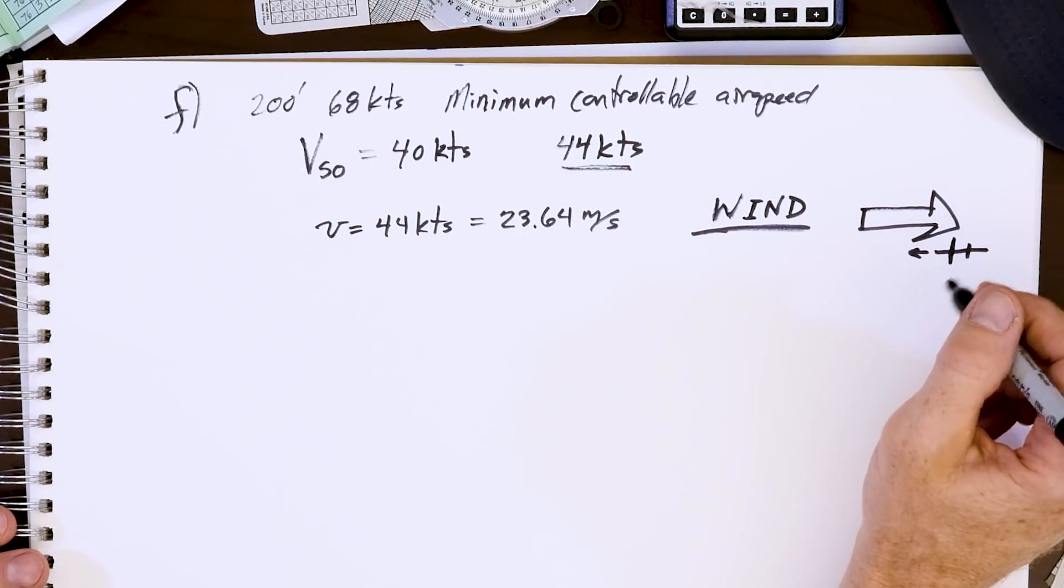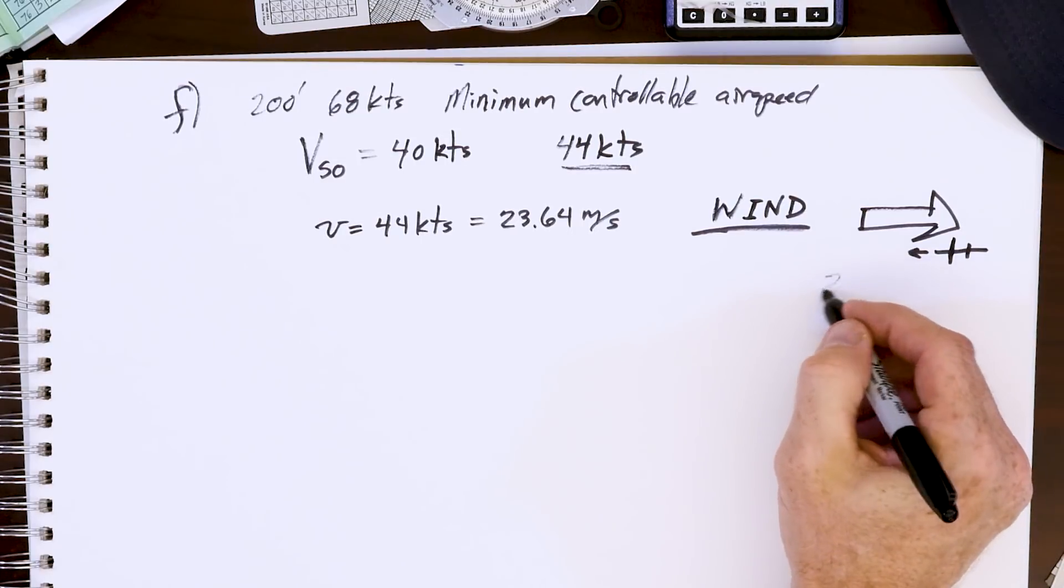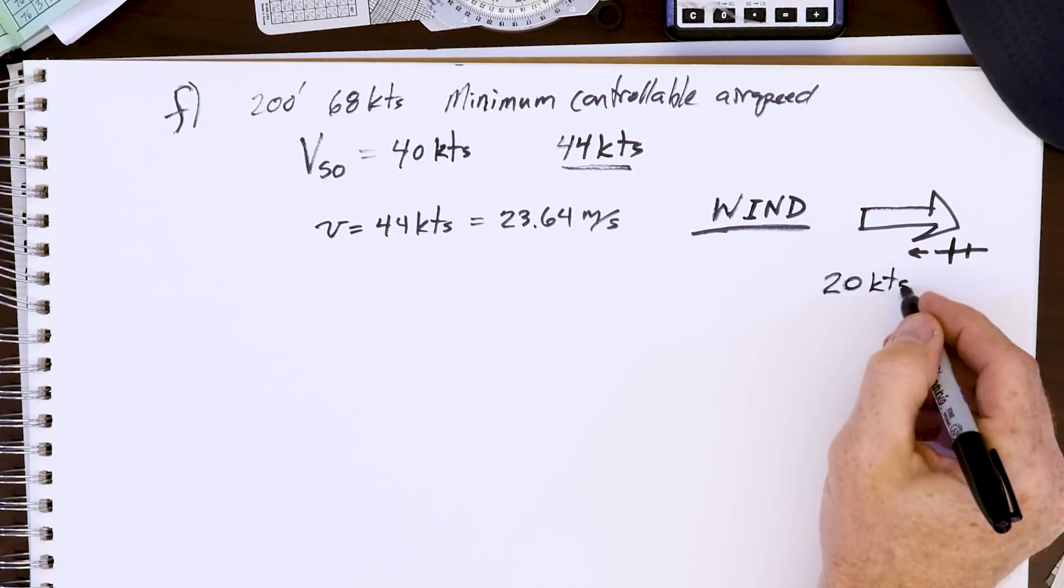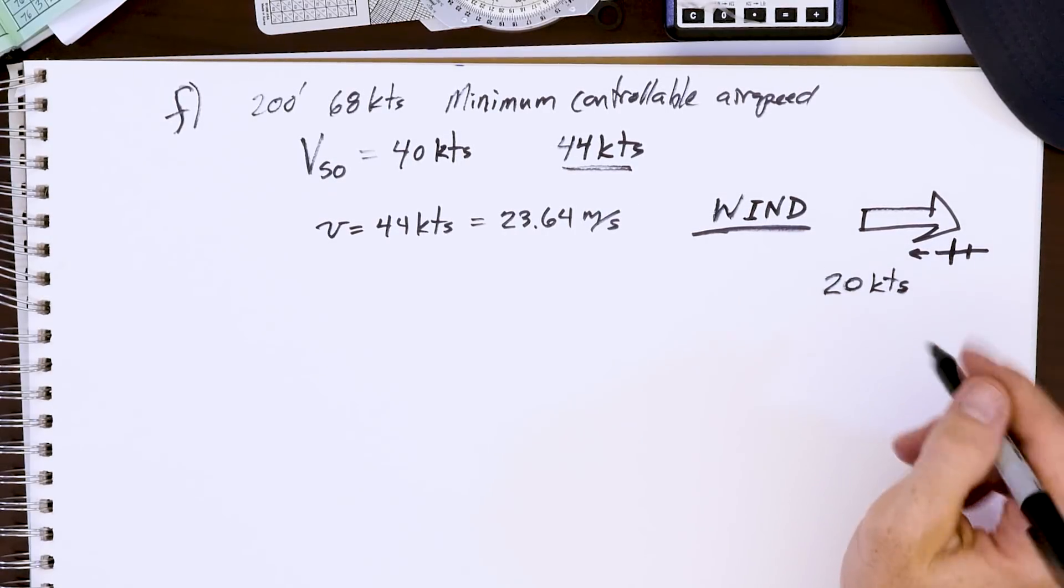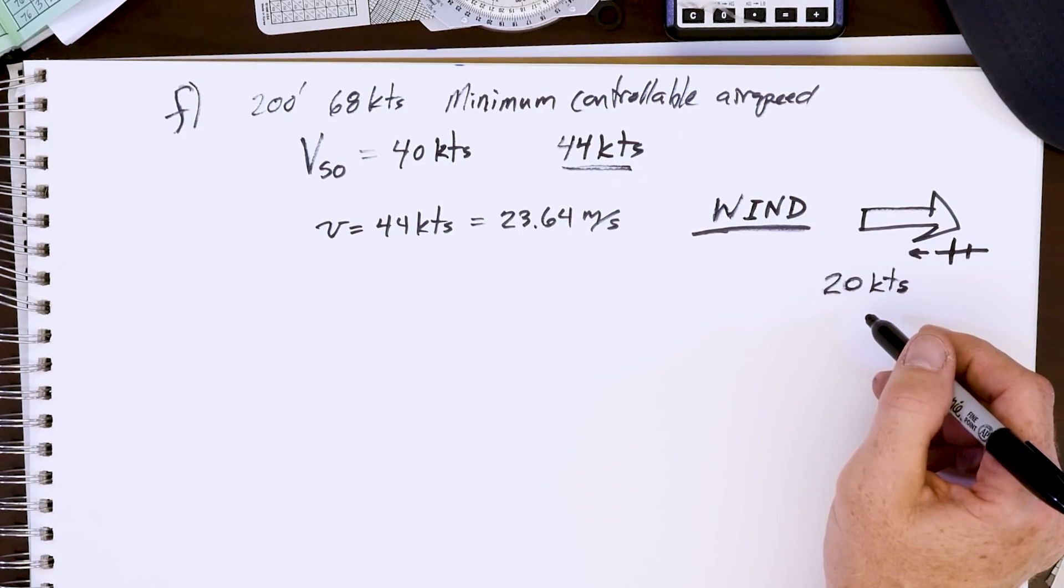Let's say we have a wind of 20 knots. We'll make it a little stiffer than average so we see a dramatic effect in the numbers, but we definitely have 20 knot winds all the time. On my private pilot check ride, I think it was 14 gusting 23 - that's pretty challenging, but it was super fun.